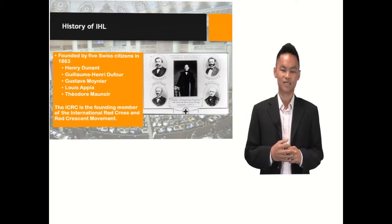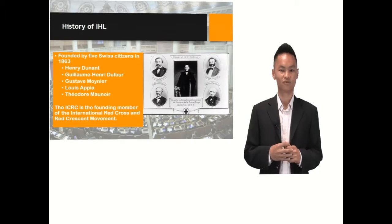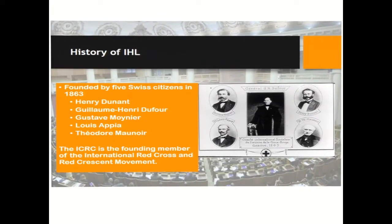Now, let's look at the history of international humanitarian law. IHL was founded by five Swiss citizens in 1863. They are Henry Dunant, Gilome Henry Dufour, Gustave Moinier, Louis Appiah, and Theodore Monois.